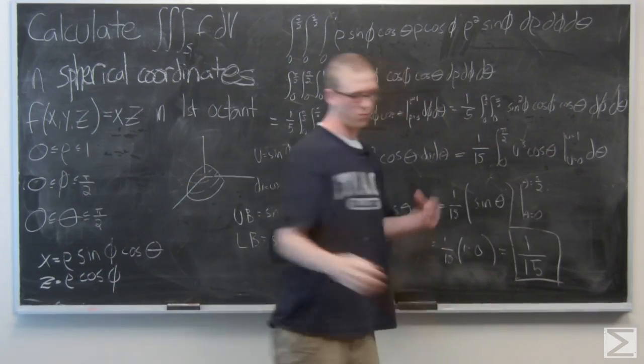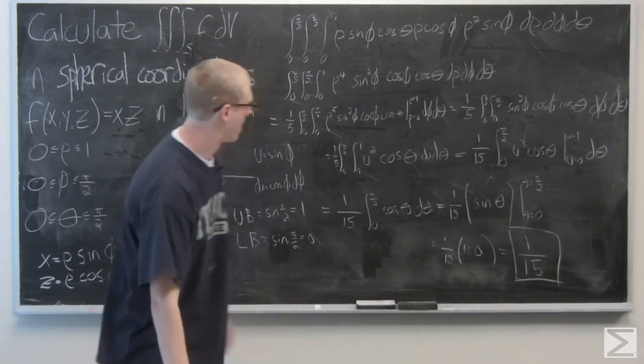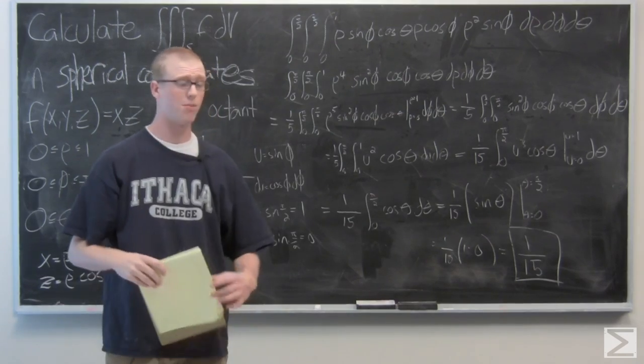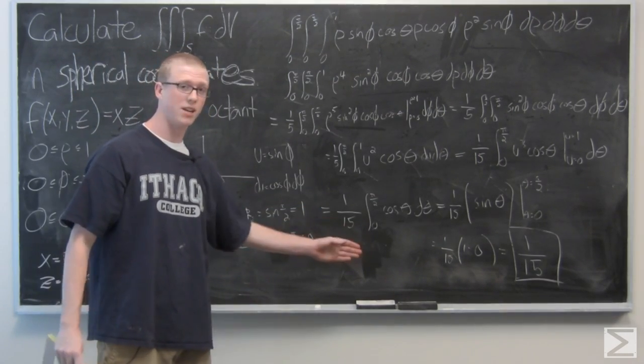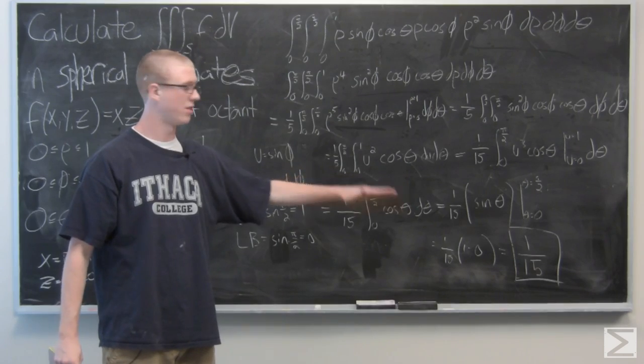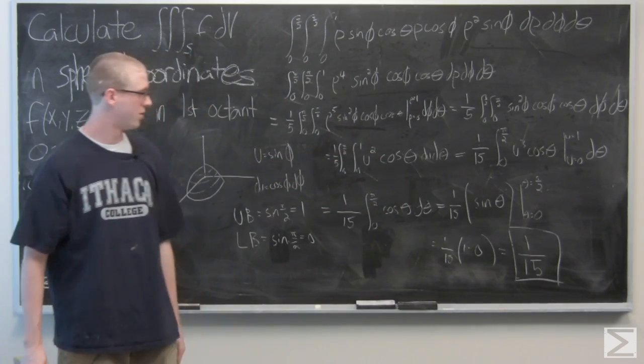So once you've completed it, we're going to take a look at the antiderivative of cosine theta. After evaluating that last integral, you should come up with one-fifteenth sine theta from theta equals 0 to theta equals pi over 2.